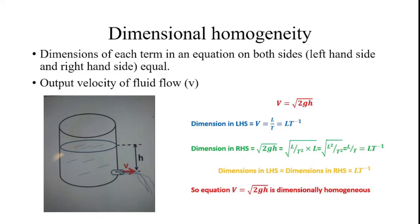After framing the equations, an important concept is dimensional homogeneity. The dimensions of each term in an equation must be equal on both sides. Every equation has a left-hand side and a right-hand side, and both sides should be in equal condition — that is the dimensional homogeneity condition.